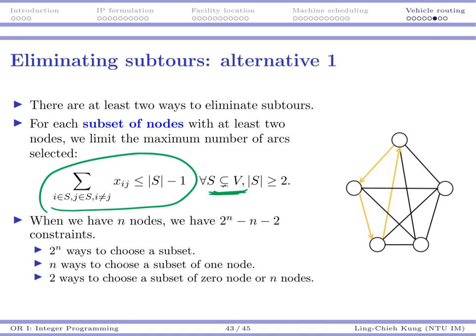So in this case, if you have n nodes, you're going to really have a lot of constraints. There are 2 to the power of n ways to choose a subset, and then we know there are n ways to have just a subset with one node, and also there are two ways for the subset of no nodes and the subset of n nodes. So if that's the case, we have so many different constraints. The number of constraints would be very large if we take alternative one.